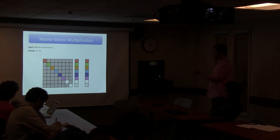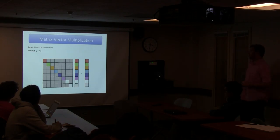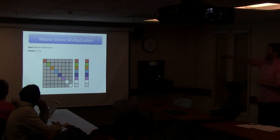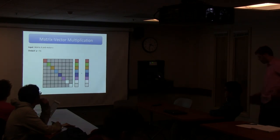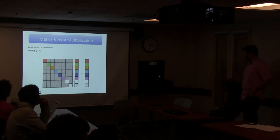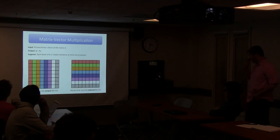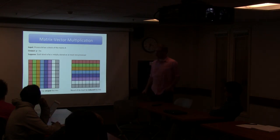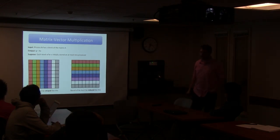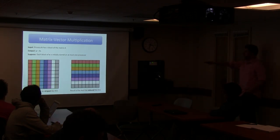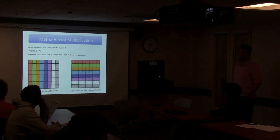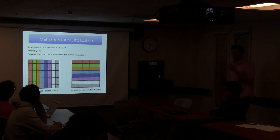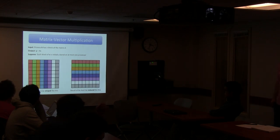Imagine we color the vector X so that processes on the diagonal each have their colored piece of data - the red processor has the red piece, the green processor has the green piece. We want the results on these diagonal processes as well. The data has to be striped - all the red data replicated up and down the column. The local multiplications should be reduced in the other direction, so we broadcast down columns and reduce across rows.